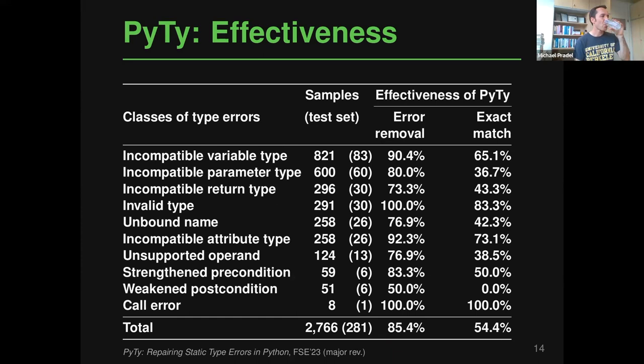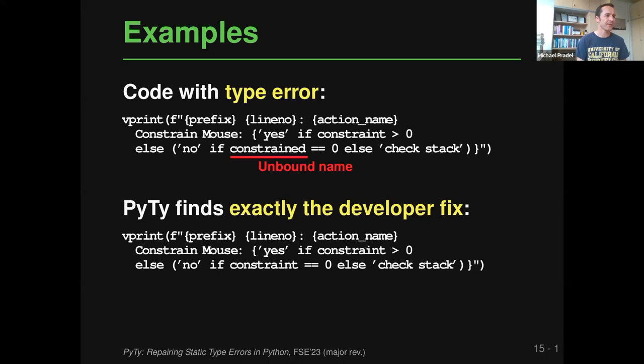Two examples: First, a case where PyTye finds exactly the developer fix — the code used an unbound name 'constraint' (a small typo), and PyTye correctly replaces it. Second, a case where PyTye finds a valid but different fix: a string variable declared as 'str' was being assigned a value of type bytes from an underscore-fmt method. PyTye suggests using a different variable called 'byte_string', while the developer instead inlined the call expression directly — semantically equivalent solutions.